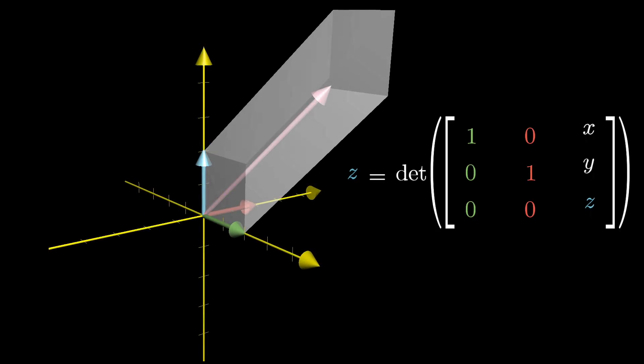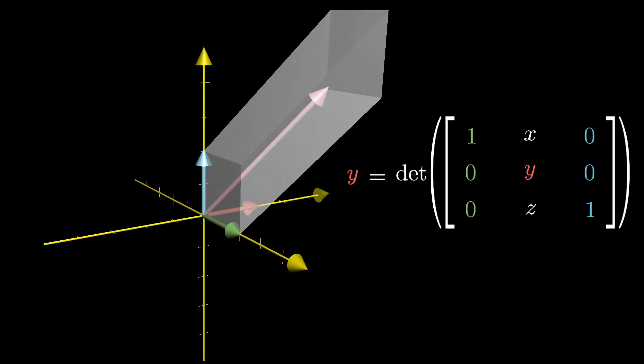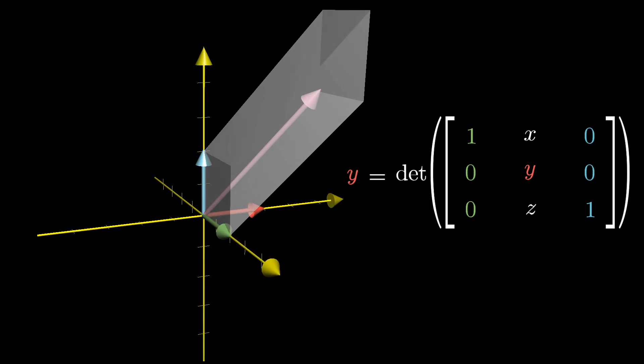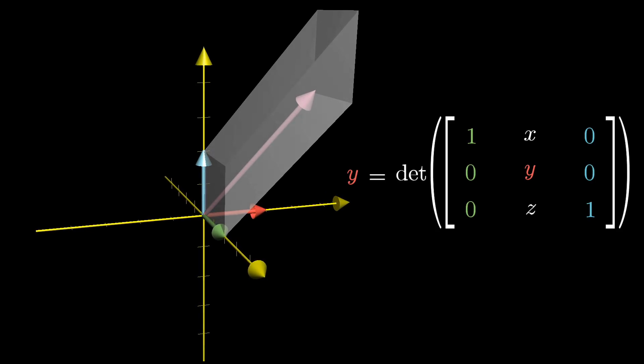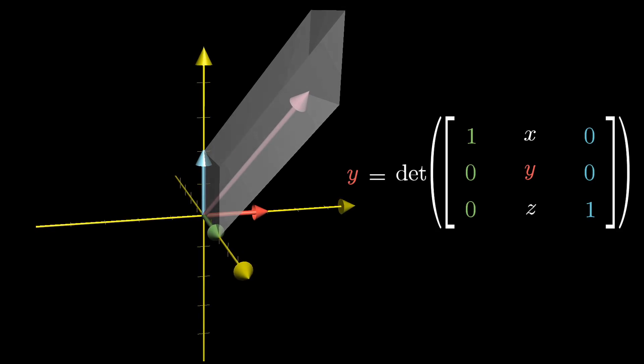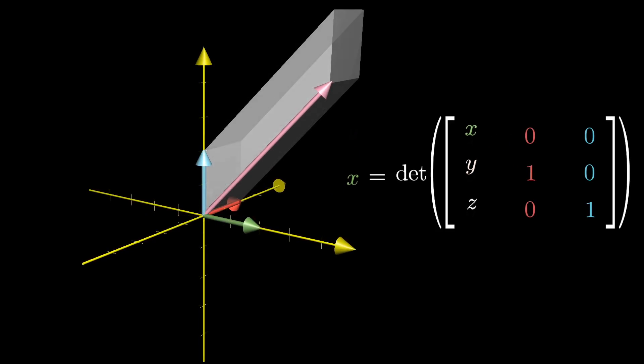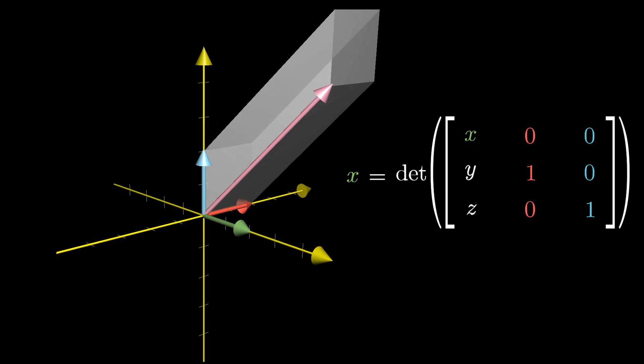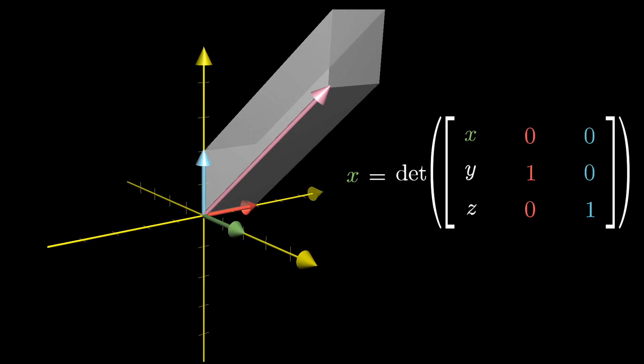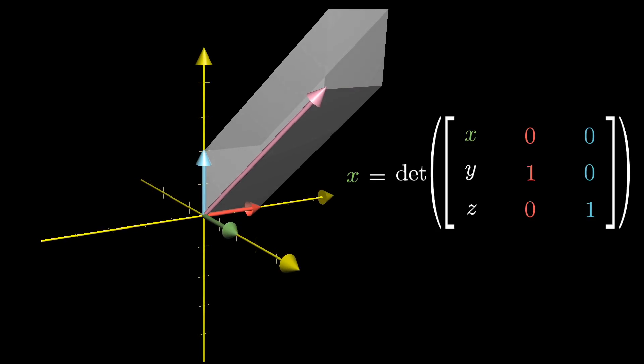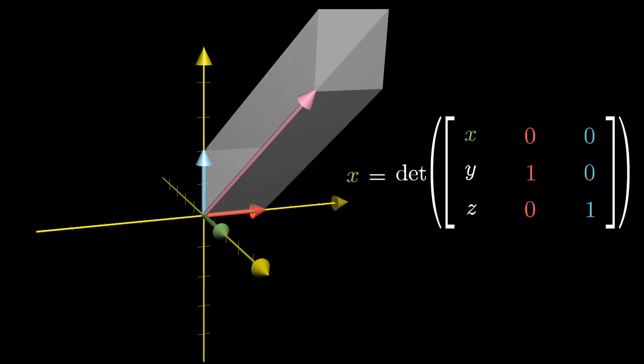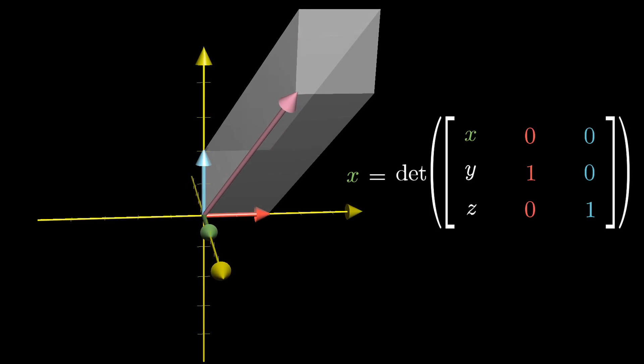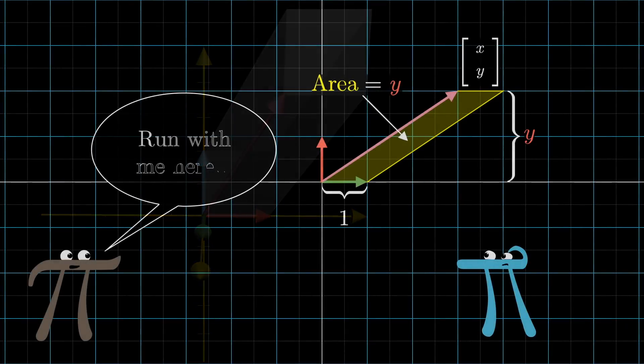And likewise, the wacky way to think about the other coordinates of the vector would be to form a parallelepiped using the vector and then all of the basis vectors other than the one corresponding to the direction you're looking for. Then the volume of this gives you the coordinate. Or rather, we should be talking about the signed volume of parallelepiped in the sense described in the determinant video using the right hand rule. So the order in which you list these three vectors matters. That way, negative coordinates still make sense.